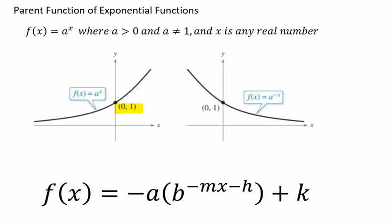On the other graph, we have f of x equals a to the negative x. Notice how that reflected across the y-axis, and we also have that point still there, (0, 1).